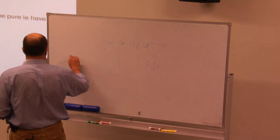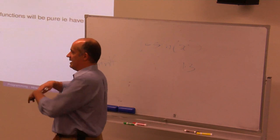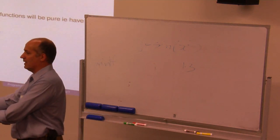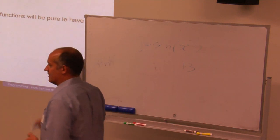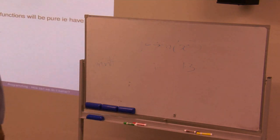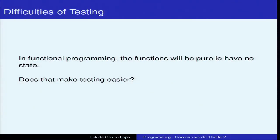Printf is not a pure function because it affects the external world — it actually prints something to the output, which is changing something outside of what printf controls. So that's an example of an impure function. Read and write to files are impure because they affect something outside of what the function is actually doing. With functional programming, everything is a pure function, so all you need to do is enumerate the inputs, check that they get the right outputs, and you've got a function that is tested. Corner cases and a few sanity checks in the middle will give you very, very good test coverage on functional code.